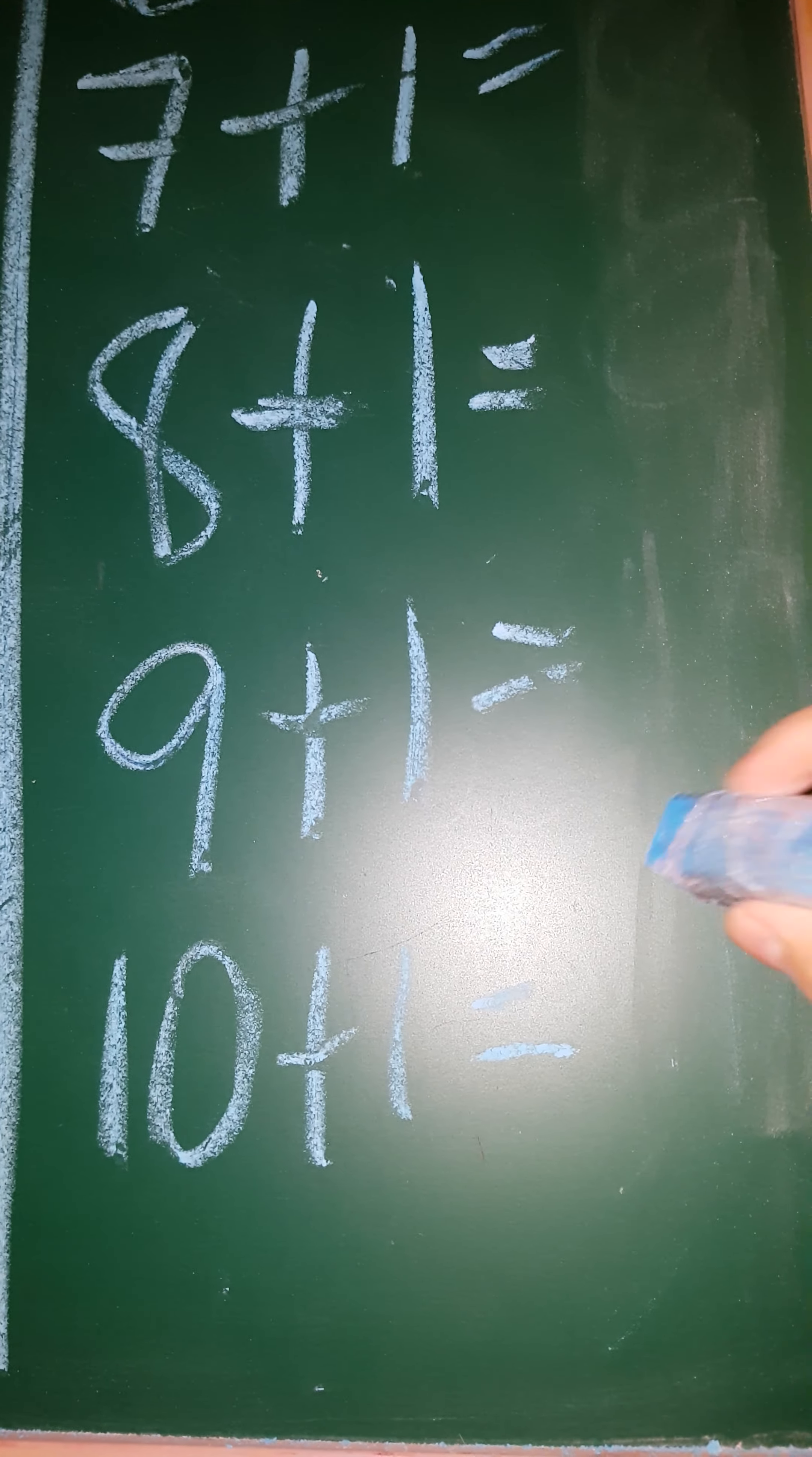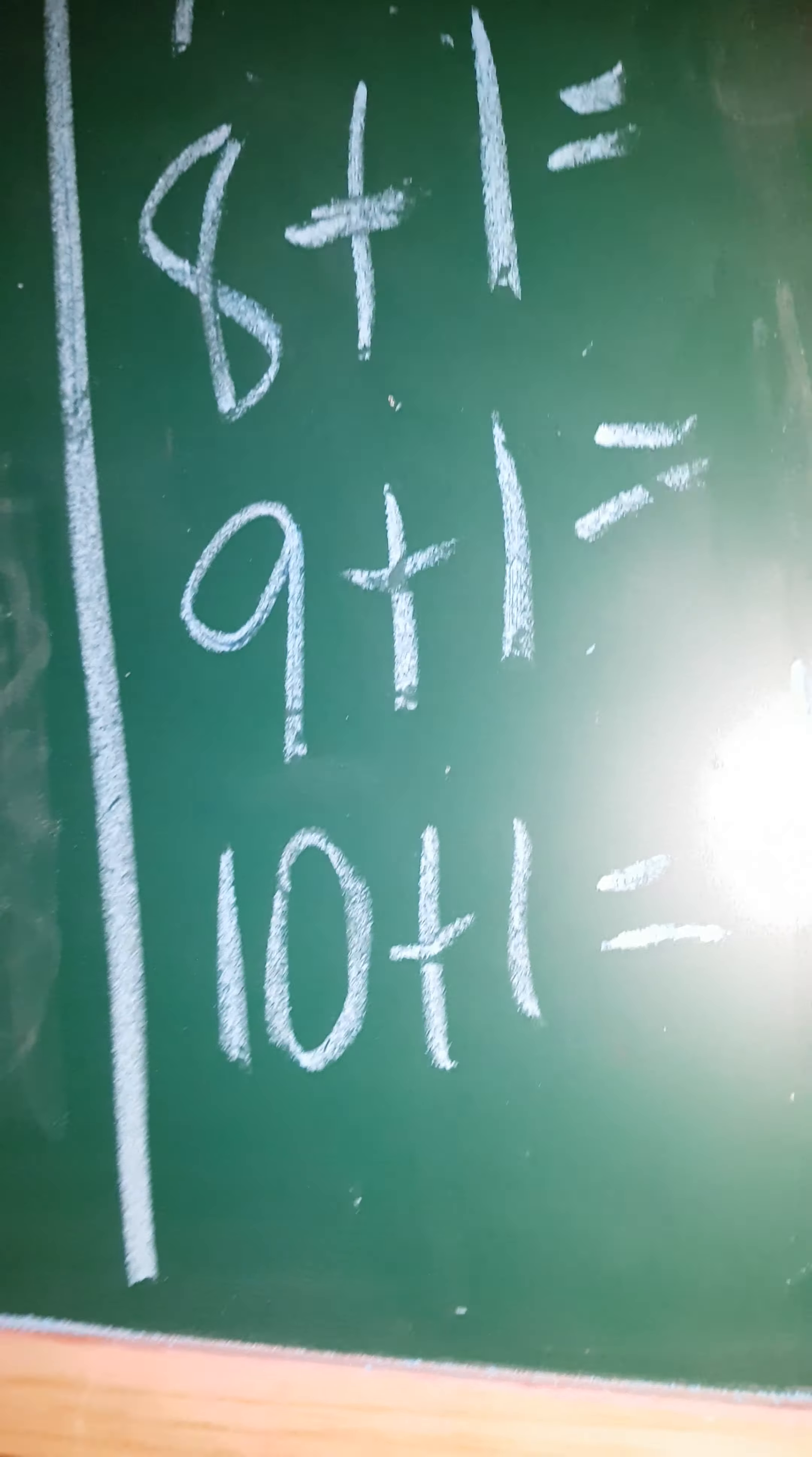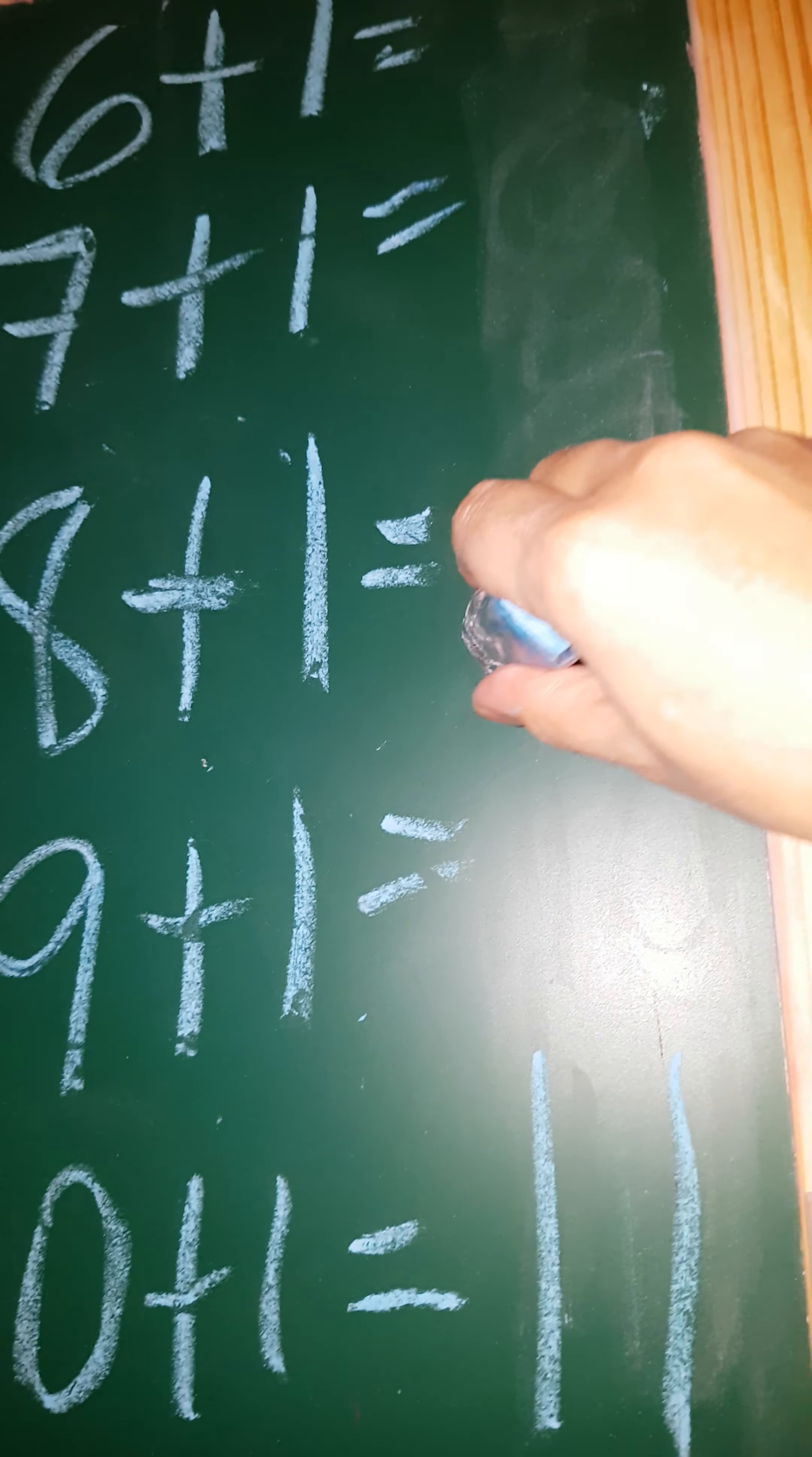Okay, again. Ten plus one equals? Eleven. Very good. Nine plus one equals. Nine plus one, Pauline, equals. Nine plus one equals? Ten. Ten. Very good, Pauline.